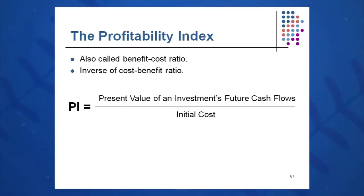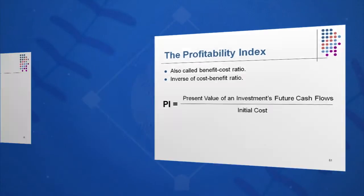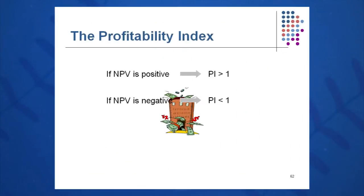It's the present value of the cash inflows divided by the initial cash outflow. It's very simple to calculate and very true to the NPV method: NPV positive means PI greater than 1, NPV negative means PI less than 1.